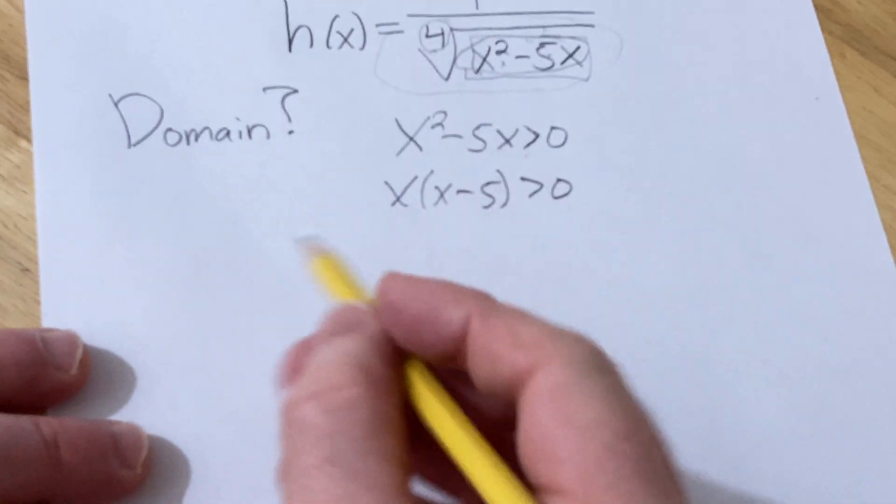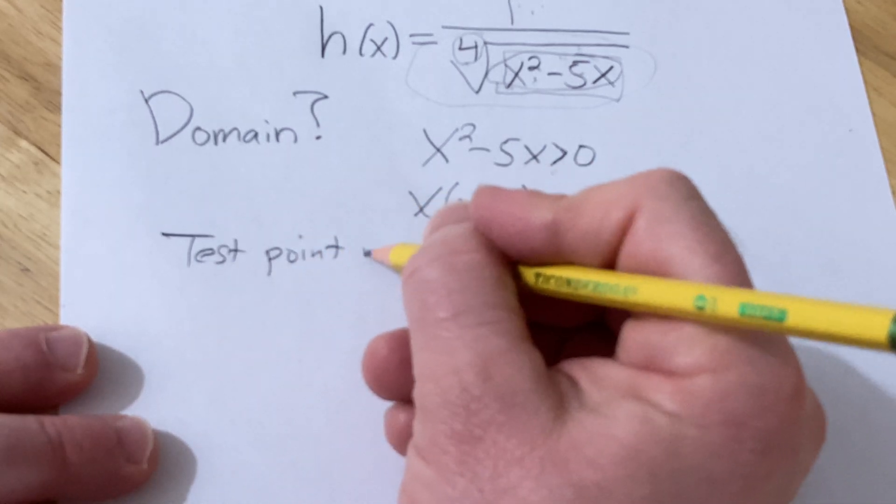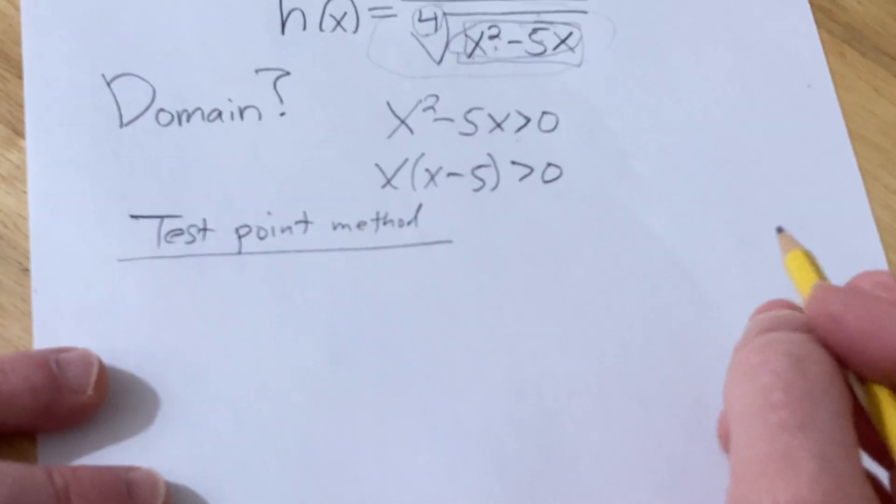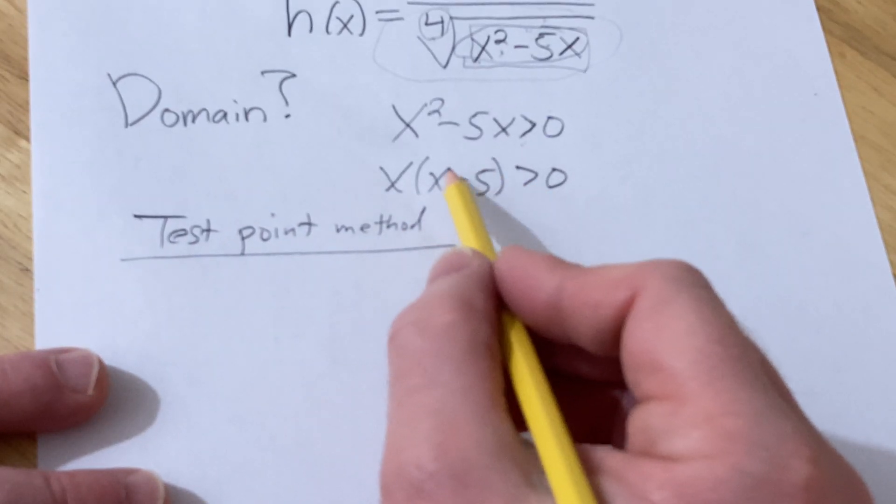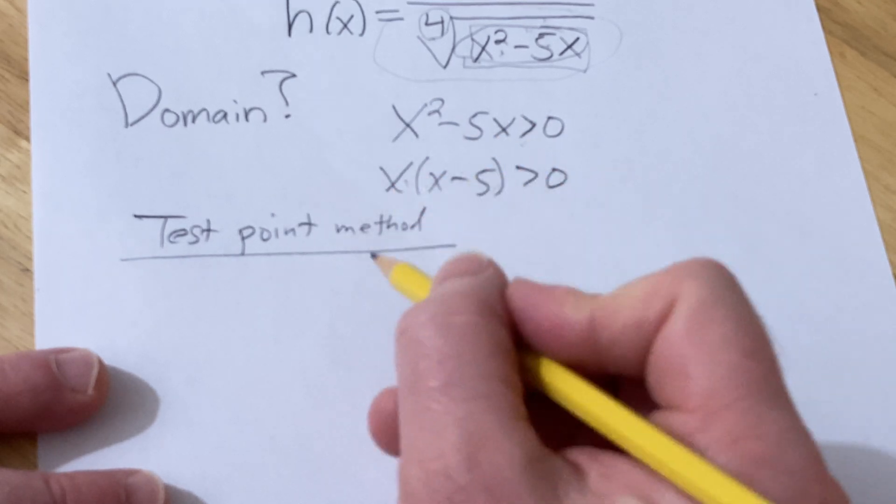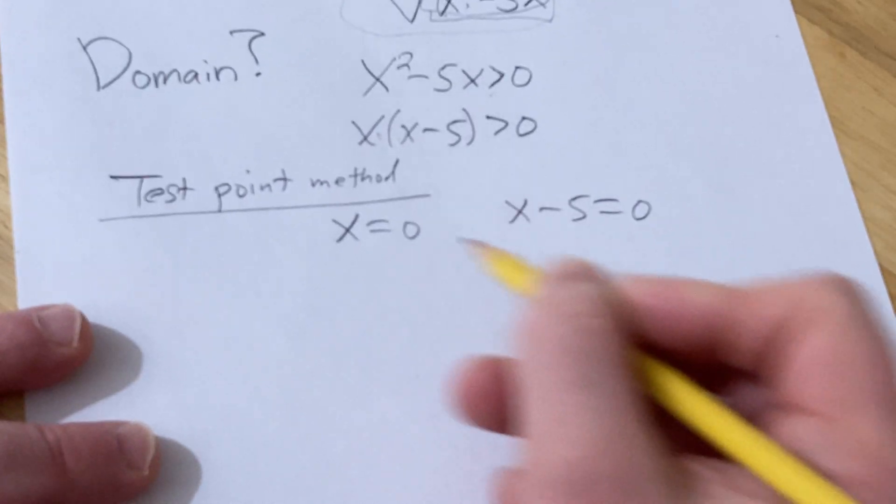Now we're going to use something called the test point method. This is one way to solve the inequality. The test point method says that whenever you have an inequality like this, where it's factored on one side and you have zero on the other, you set each factor equal to zero and then you solve.